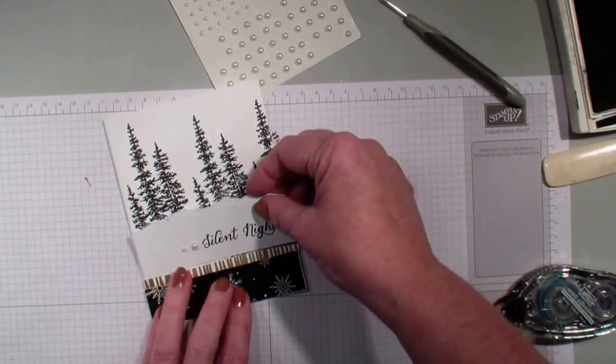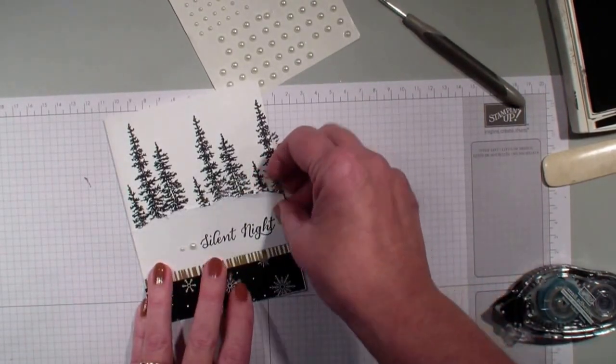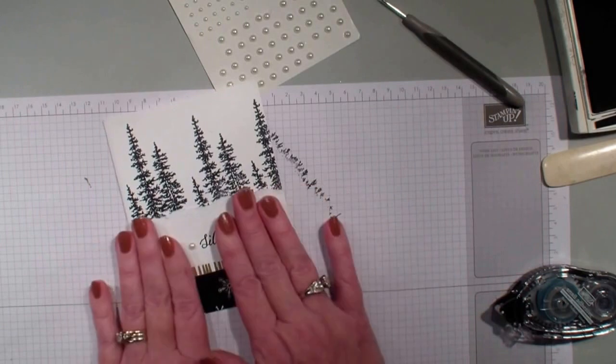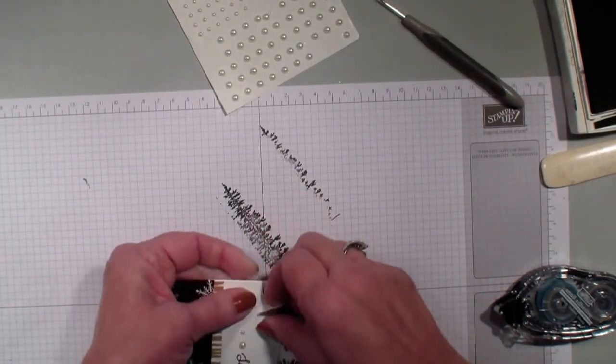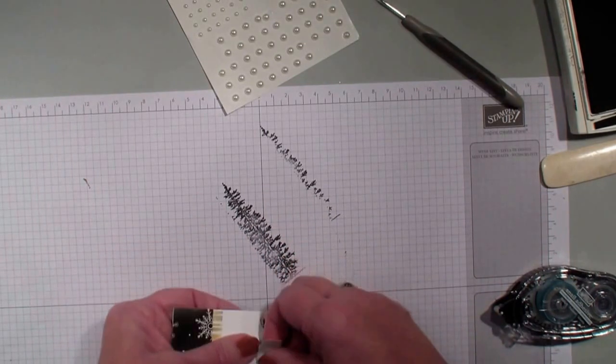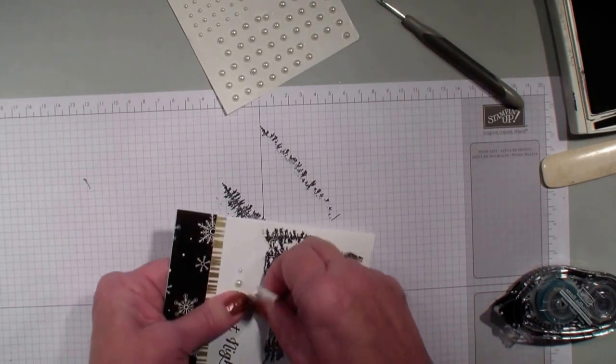Then I'm going to bring in that piece that I stamped the Silent Night. I'm going to add that right there. I want to tear that down a little more. I see it's a little bit high. I'm just going to go in and rip that.